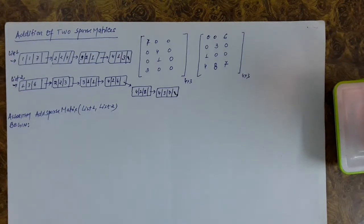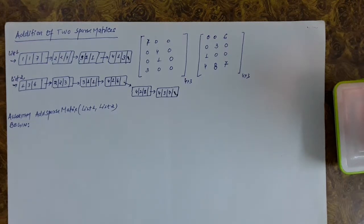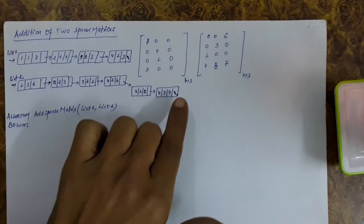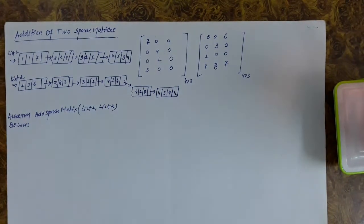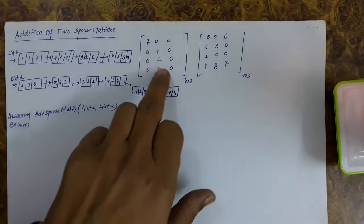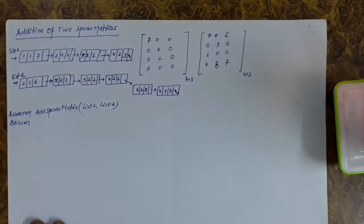We will discuss the addition of two sparse matrices. In this lecture, we are considering two sparse matrices of the same size, meaning the row and column numbers are the same. For the addition of these two sparse matrices, we consider that they have been represented through linked lists.